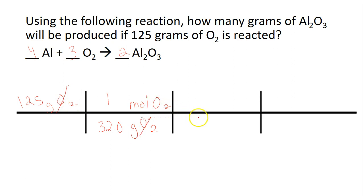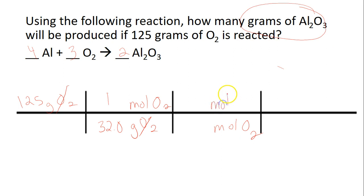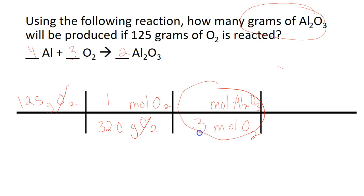We're going to go back to moles of O2 — it's always 1 mole when converting from grams. O is 16, but since we have 2 of them, we make that 32.0. Grams cancels out, leaving moles of O2. We're trying to get to grams of Al2O3, so before we go to grams, we've got to do moles first. Moles of Al2O3 — I see mole over mole, and I'll circle it to get my coefficients: O2 is 3 and Al2O3 is 2. Moles of O2 cancels out, leaving moles of Al2O3.